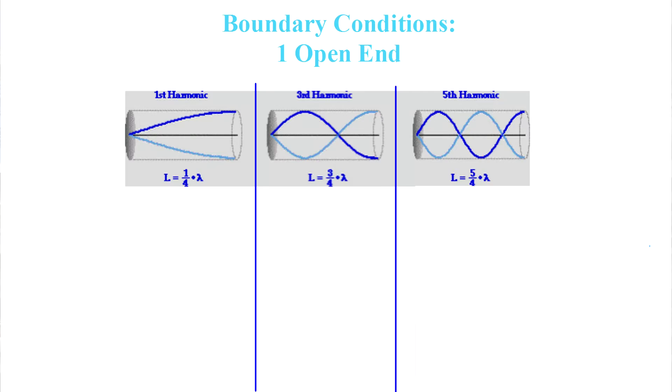And last of all we have one closed end and one open end, like a clarinet for example. These standing waves look like this.